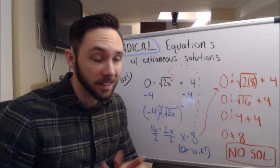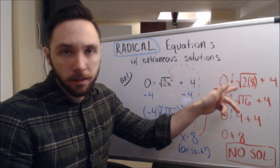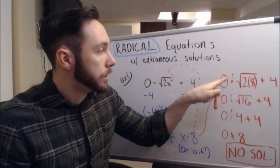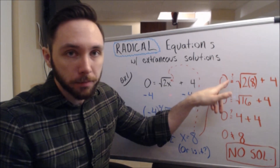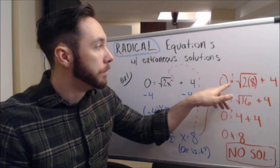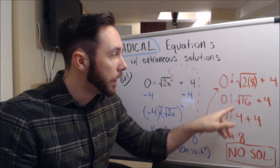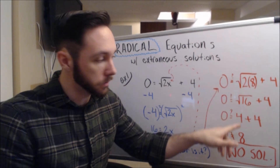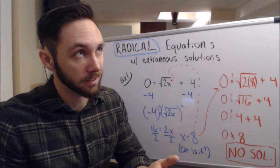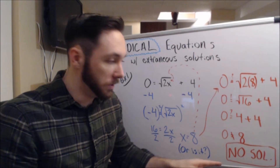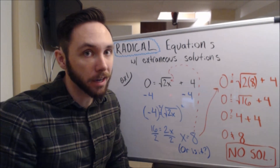Now is that true? We just plug it in to check and see if it's right. So when I take that 8 and I plug it in for x — I did that here in red. When I'm checking solutions, I put a little question mark above my equal sign. Is 0 equal to the square root of 2 times 8 plus 4? 2 times 8 is 16, the square root of 16 is 4. Is 0 equal to 4 plus 4, is 0 equal to 8? No. So no solutions — this problem has no solutions. This 8 is actually extraneous, so we don't consider it a solution to this radical equation.